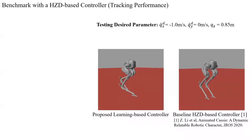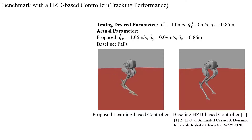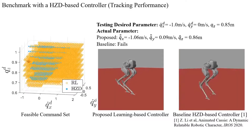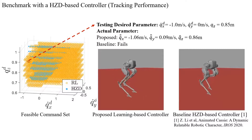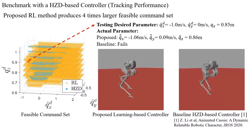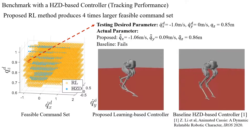In MATLAB Simulink, we tested the robot following a backwards walking speed of minus one meter per second at 0.85 meter walking height. The proposed learning-based controller follows this command with small tracking errors, while our previous hybrid zero dynamics-based controller caused the robot to fall in this case, as backwards walking is more challenging. Testing across the entire command range, the RL-based controller produces a feasible command set four times larger than the baseline, with better tracking performance.